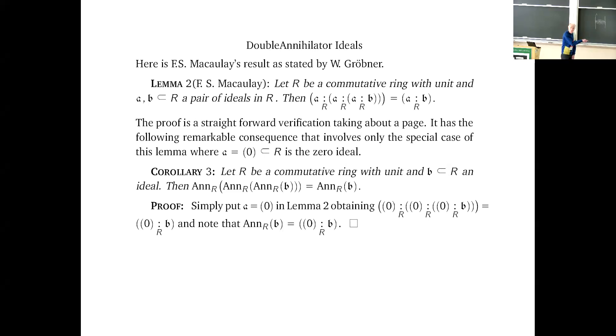So in Macaulay's case, he did it in the case of polynomial rings. But Gröbner gives him the credit for this result in a very lovely paper where Gröbner gives a very elementary proof, takes about a page and a half of computation, but it's totally elementary. It's nothing but, quote, linear algebra, unquote. And it gives you this rather strange identity between two ideals, A, B, in this double dot construction.